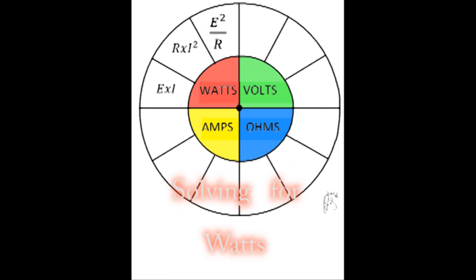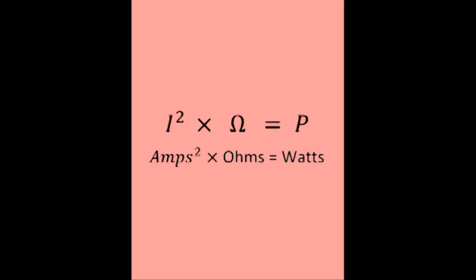This is Lesson 2 of 12, and is the second of three lessons on solving for watts using amps and ohms. Specifically, amps squared multiplied by ohms renders wattage.